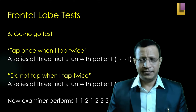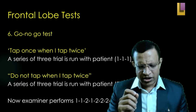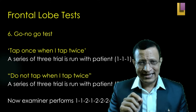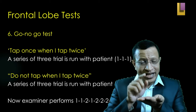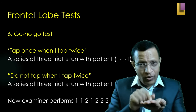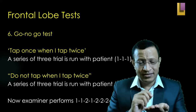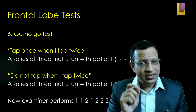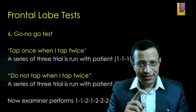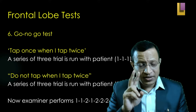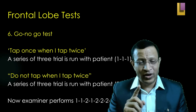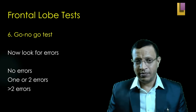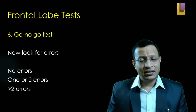Moving to the go-no-go test. Give clear instruction to the patient sitting in front of the examiner: 'Tap once when I tap twice; do not tap when I tap once.' Do one or two trials until the patient has understood. Then the examiner taps once and twice in a sequence and observes the patient's response. If there are no errors, frontal lobe function is very good. One or two errors indicate mild impairment. More than two errors indicates a significant problem.